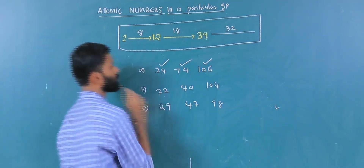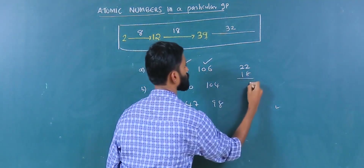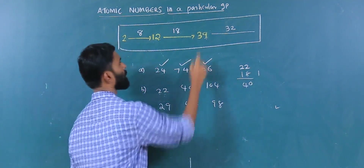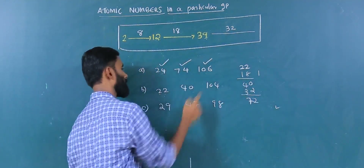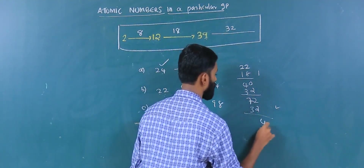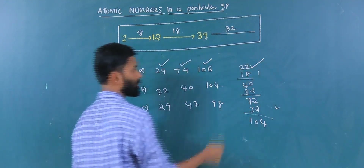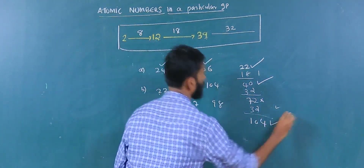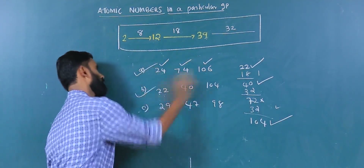Next question: starting with 22. We add 18 to get 40. Then 40 plus 32 gives 72. 72 is not given, so we go to the next element: 72 plus 32 equals 104. So the atomic numbers 22, 40, 72 (not given), and 104 are present. These three atomic numbers — 22, 40, and 104 — are present in the same group.